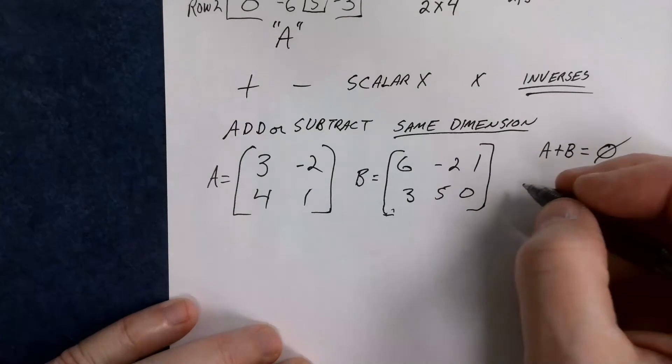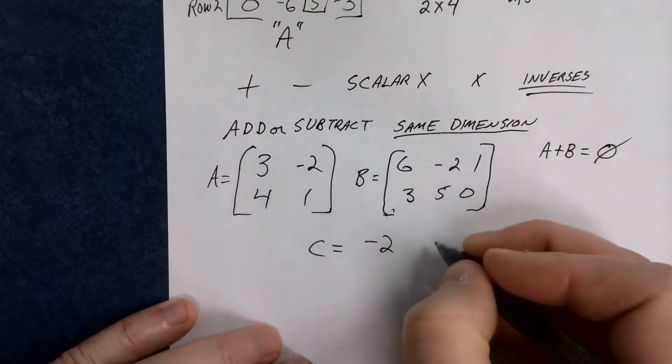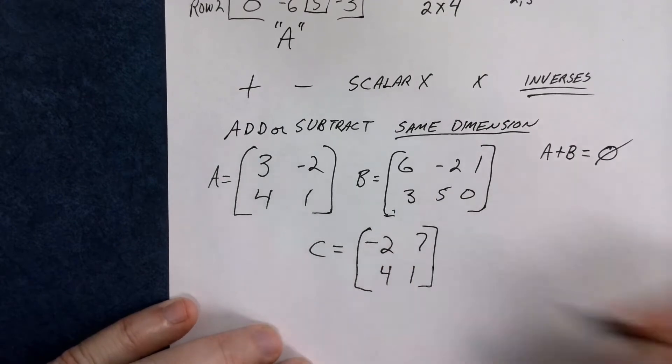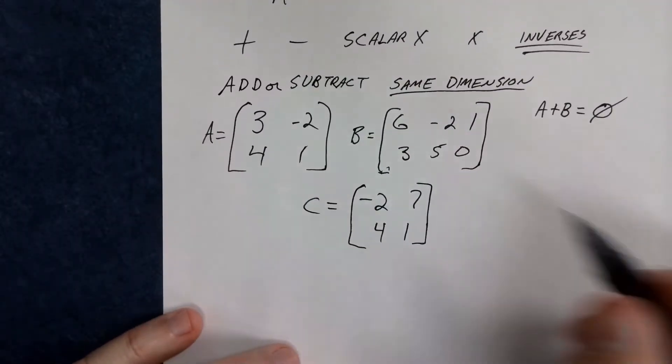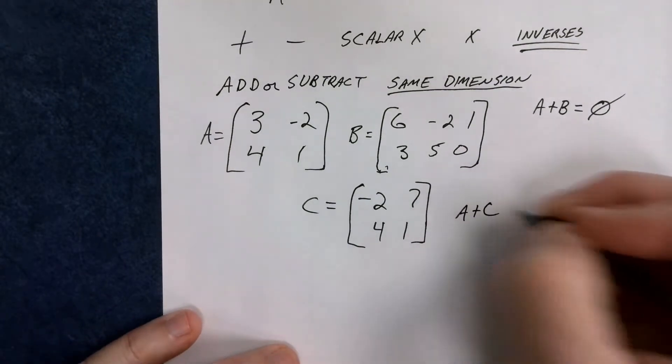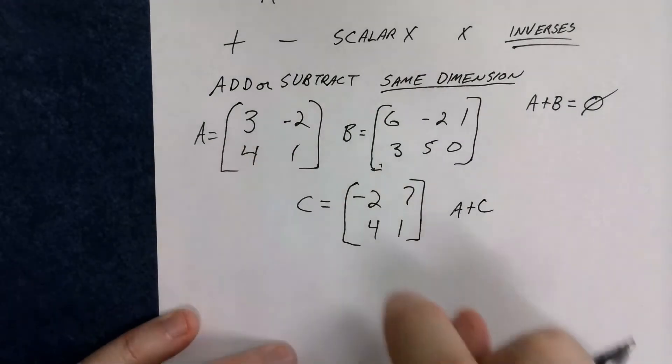So if I did a third matrix up here, C, call this negative 2, 7, 4, 1. And I said, okay, how about this? How about A plus C? Well, A plus C I could do, because that's a 2 by 2 and that's a 2 by 2.